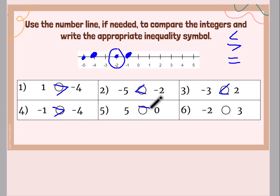5 and 0. 5 is greater than 0. Negative 2 and positive 3. Well, negatives are smaller than positives, right?